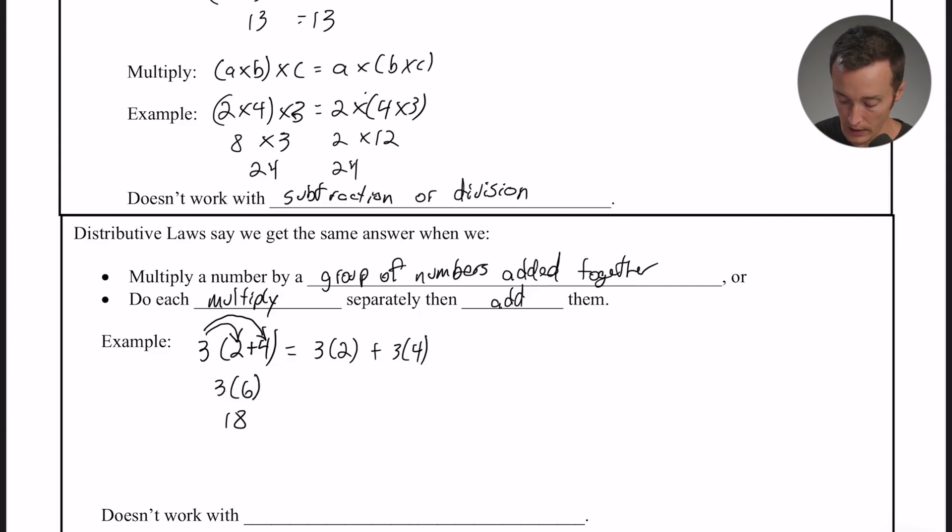So if I work down that left hand side, 2 + 4 is 6, so that would be 3 × 6 which is 18. But that's going to be the same thing if I just did these individually: 3 × 2 is 6, 3 × 4 is 12, and then if I added those together I would also get 18. So it's just showing you another way to do that. And again, this doesn't work with division, so this is only true for multiplication.